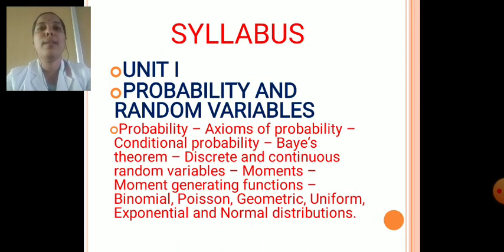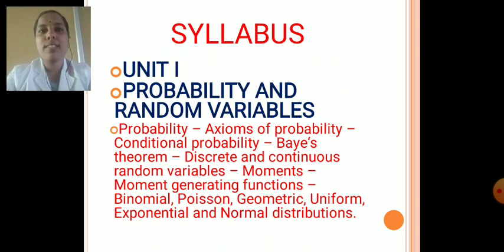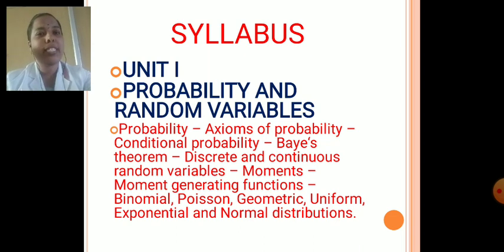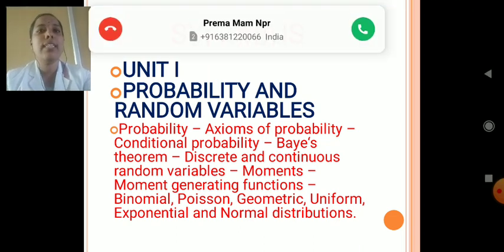Let us share syllabus first. In this Probability and Queuing Theory, it consists of five units. Unit 1 is Probability and Random Variables. In this unit, we have some subtopics also. The first one is, we are going to learn what is Probability. As we all knew it from our 9th standard itself. Yes, Probability is nothing but chances.